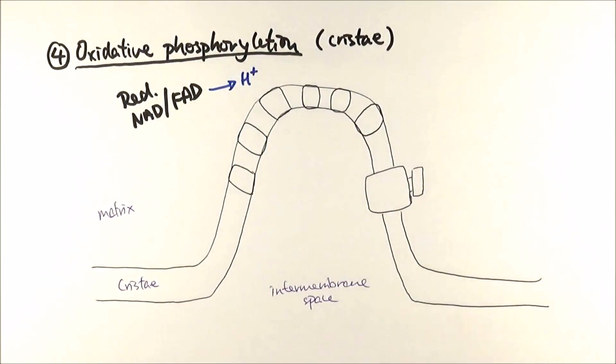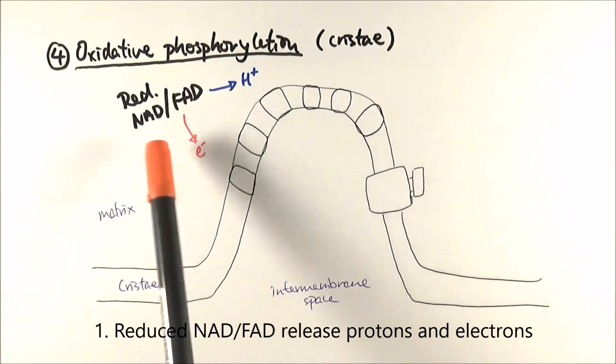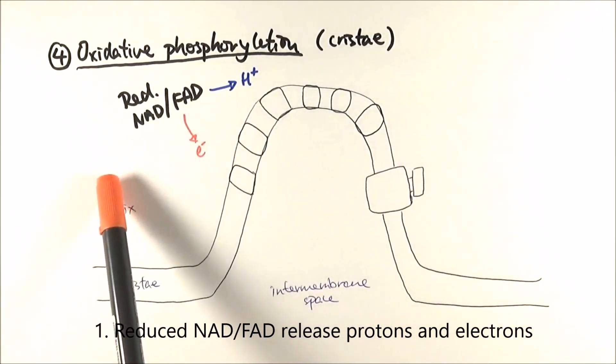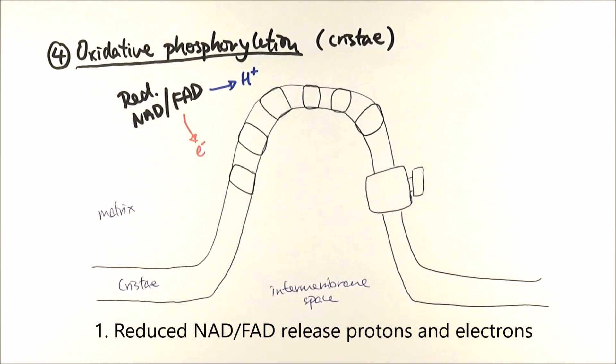Apart from releasing protons, they also release electrons in the process. We're not going to worry too much about exactly how many electrons they're going to release at this point, but just keep in mind that they do. The reduced NAD and FAD release protons and electrons, and they regenerate the NAD and FAD, which goes back to pick up more protons and electrons from the Krebs cycle.